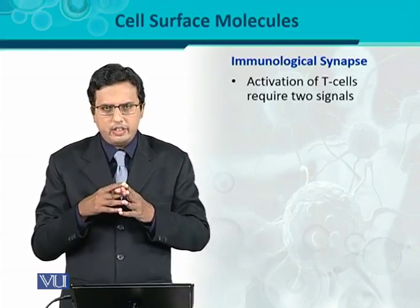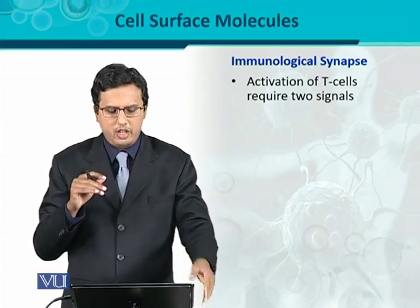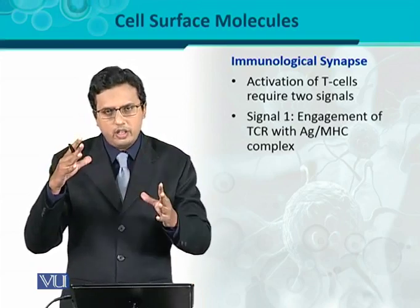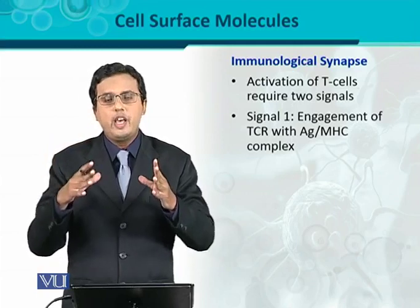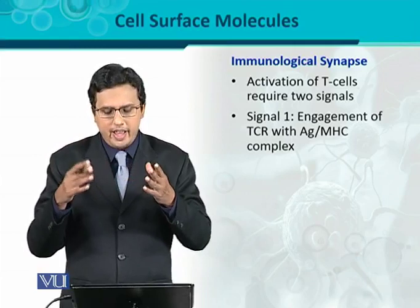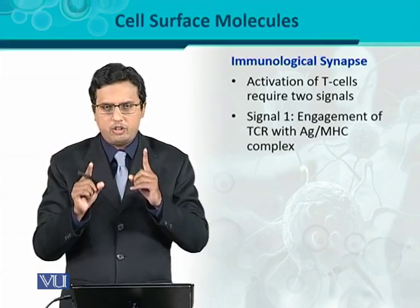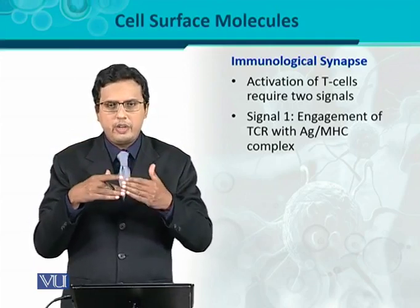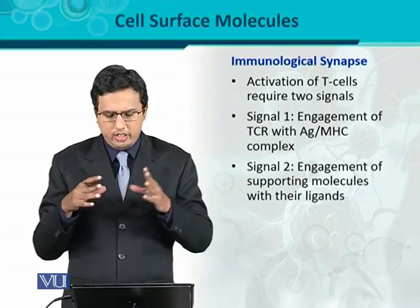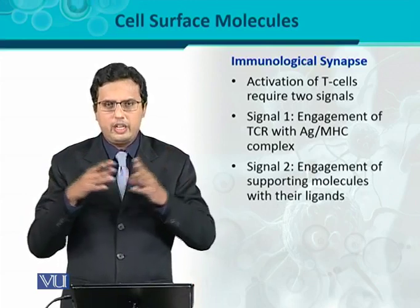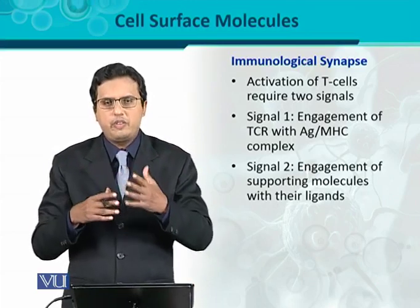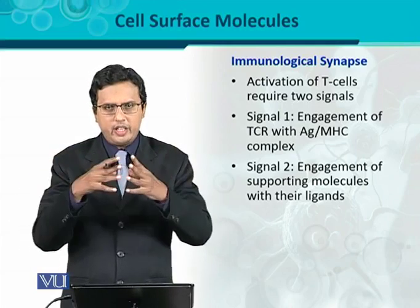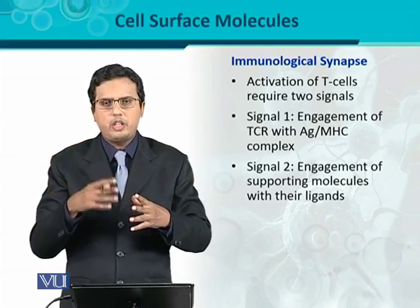Activation of the T-cells requires two signals. The first signal is the engagement of the T-cell receptor with the antigen — presented on the surface of the antigen-presenting cell in association with the Major Histocompatibility Complex (MHC). That is Signal One. The second signal is the engagement of supporting or co-stimulatory molecules with their corresponding ligands, which are expressed on the surface of T-cells or antigen-presenting cells, interacting with one another.